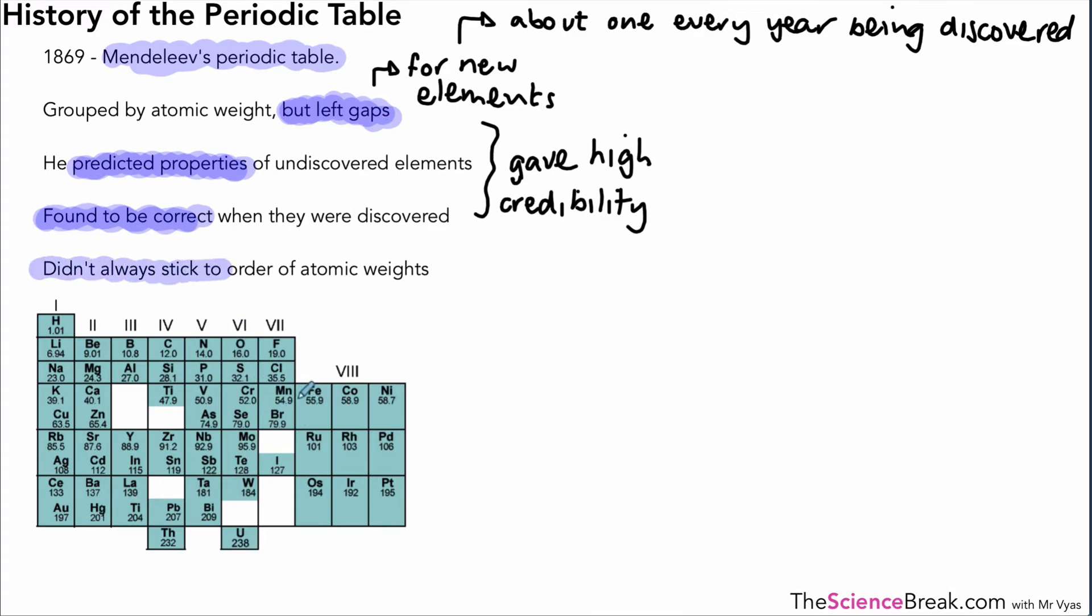What he also did was he didn't always stick to the order of the atomic weights, so if properties didn't fit that pattern he switched one or two of them around because he thought the properties were more important sometimes than the order of atomic weights. The reason why the atomic weight order didn't always work was because they hadn't discovered isotopes yet and as we know isotopes can affect the atomic mass so that variation that couldn't be explained was because of the existence of isotopes.